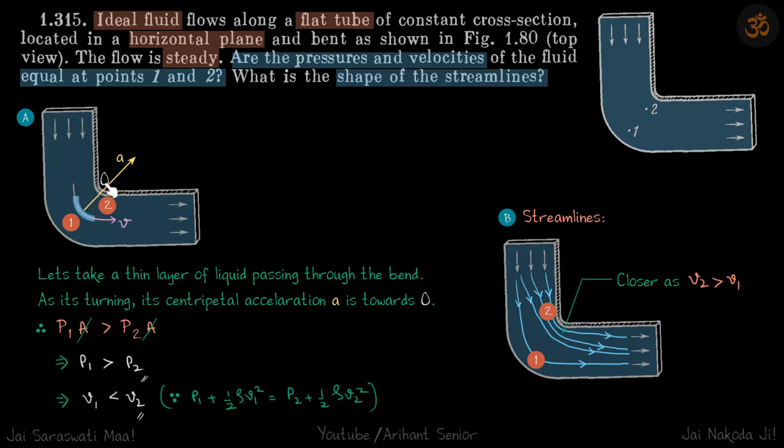Let's summarize what we've discussed. Taking a thin layer of liquid passing through the bend, as it's turning, its centripetal acceleration is towards O. Therefore, p1A is greater than p2A, and therefore p1 is greater than p2.